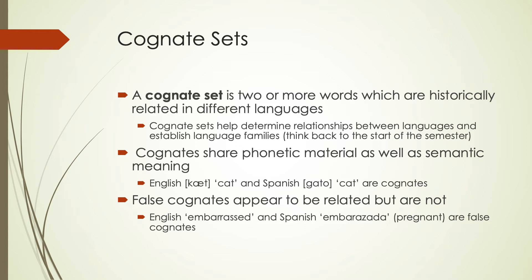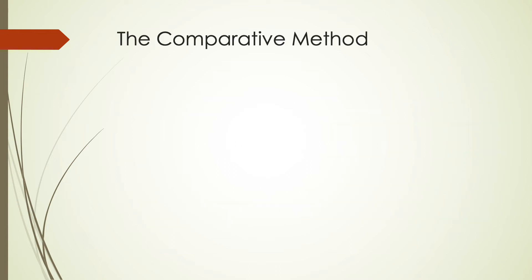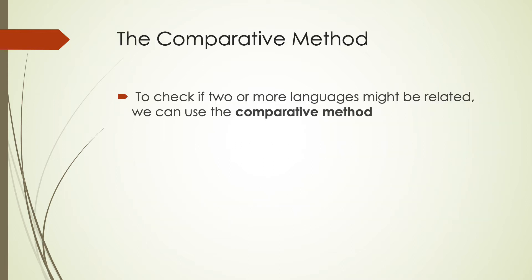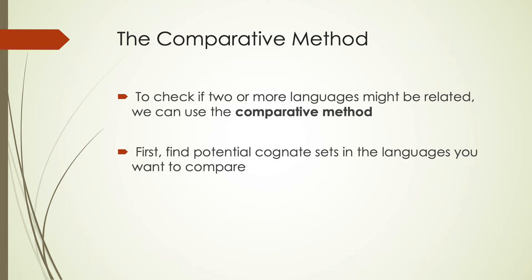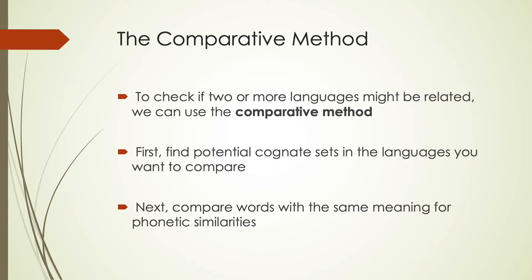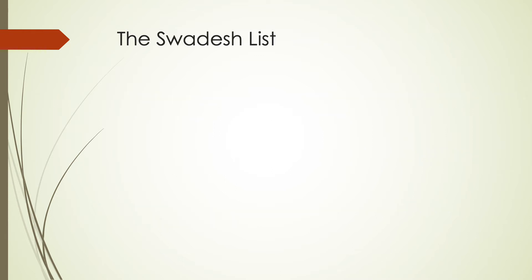Once we find cognate sets, we can then use what's known as the comparative method to check how languages might be related and figure out what the languages might have looked like prior. The first step is to find those cognate sets and compare words with similar meaning to find phonetic similarities and determine the most likely scenario for what that previous language form would be. One of the most common ways to do this is to use something known as a Swadesh list.